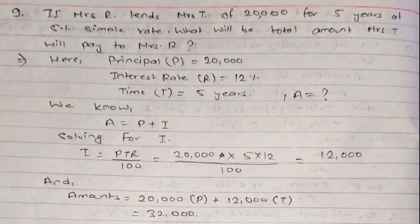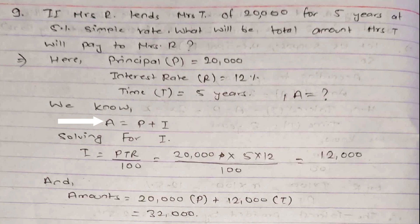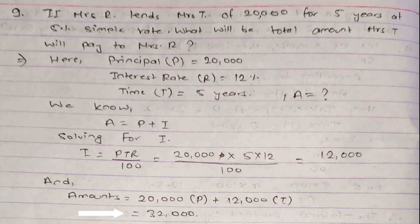Question number 9: Miss R lends Miss T 20,000 for five years at 12% simple interest. What total amount will Miss T pay to Miss R? Given: principal = 20,000, rate = 12%, time = 5 years. Interest = P × T × R / 100 = 20,000 × 5 × 12 / 100 = 12,000. Total amount = principal + interest = 20,000 + 12,000 = 32,000. Therefore the total amount Miss T will pay to Miss R is 32,000.